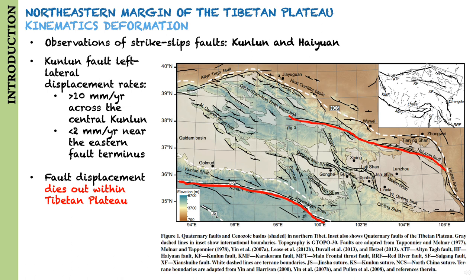Along the Kunlun Fault, a pronounced eastward decrease in left-lateral displacement rates from over 10 mm per year across the central Kunlun to less than 2 mm per year near the eastern fault terminus suggests that fault displacement dies out within the plateau.